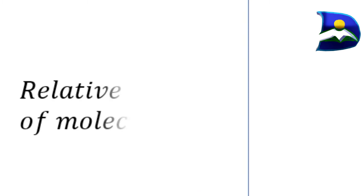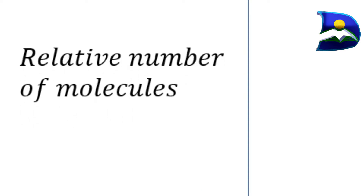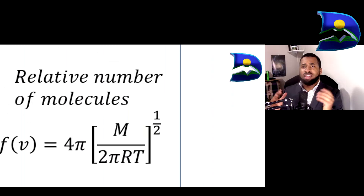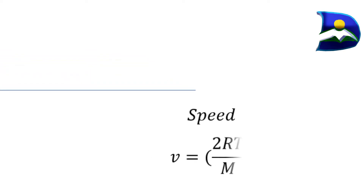Let's draw back to the various formulas and how this is determined using the Maxwell-Boltzmann distribution curve. The curve tells us there is great insight into the relationship between specific speed and the relative number of molecules. The relative number of molecules shows the relationship which is f(v), shown as 4π times (M over 2πRT) to the power of one half, multiplied by v squared. So the x-axis represents speed, and v equals the square root of 2RT over M.